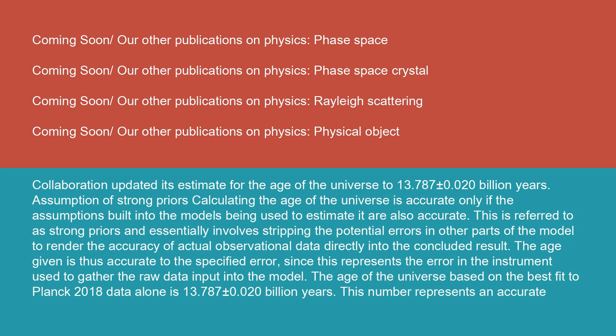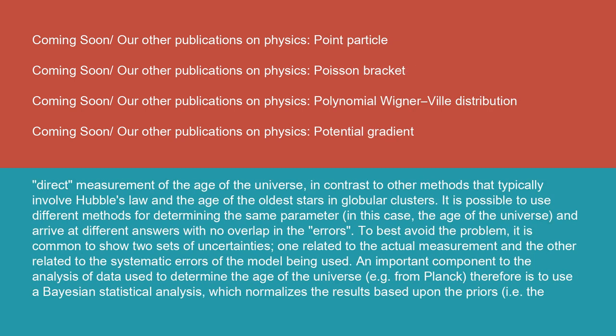The age of the universe based on the best fit to Planck 2018 data alone is 13.787 plus or minus 0.020 billion years. This number represents an accurate, direct measurement of the age of the universe in contrast to other methods that typically involve Hubble's law and the age of the oldest stars in globular clusters. It is possible to use different methods for determining the same parameter, in this case the age of the universe, and arrive at different answers with no overlap in the errors.